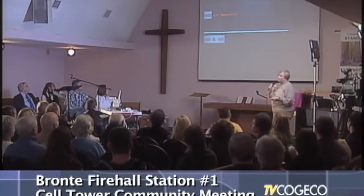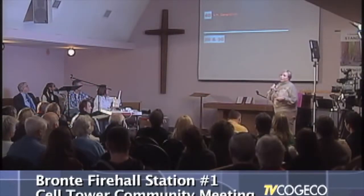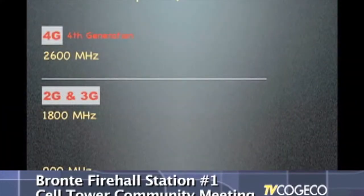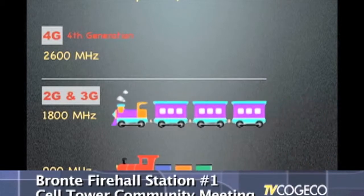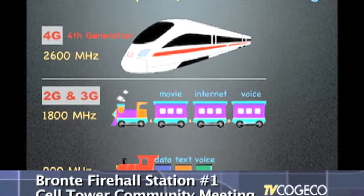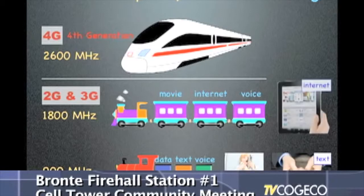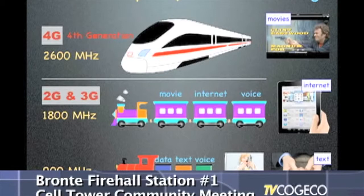What does 4G mean? It actually means fourth generation, whereas 2G and 3G refer to second and third generation. These antennas have different carrier frequencies. Here we can see 2,600 megahertz for the 4G antenna. You can think of these carrier frequencies almost as vehicles — trains or buses — carrying information. The cargo they carry includes movies, data, internet access, text, and voice.